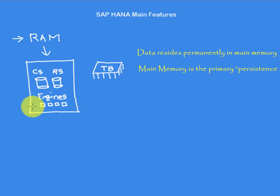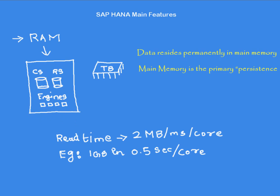For example, we have the OLAP engine, we have the JOIN engine, we have the text analysis engine, and many other engines which we will see in a later topic. All of these are inside the RAM. The performance of RAM in terms of scan speed is about 2 megabytes per millisecond per core — roughly 1 GB in 0.5 seconds per core.